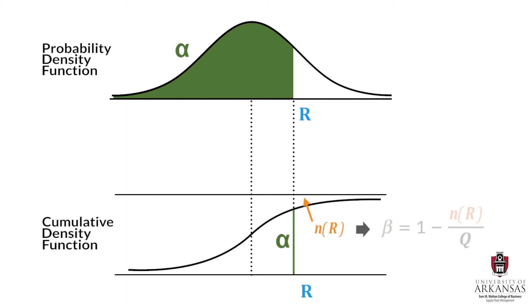The fill rate beta is calculated as 1 minus N of R divided by Q. Think of Q as the average demand volume per cycle, and N of R as the average stock out quantity per cycle. This means that N of R over Q is the proportion of demand not filled from on-hand inventory. Accordingly, 1 minus that will give us the fill rate.